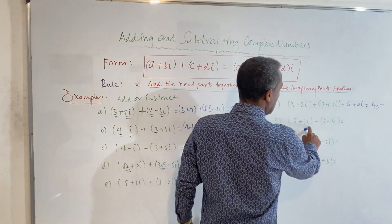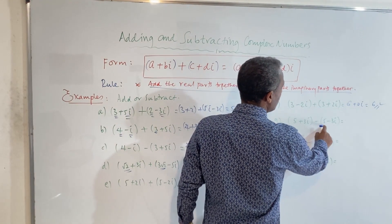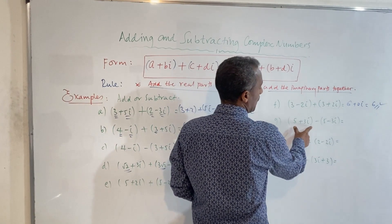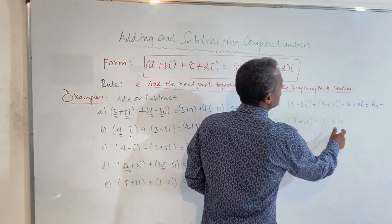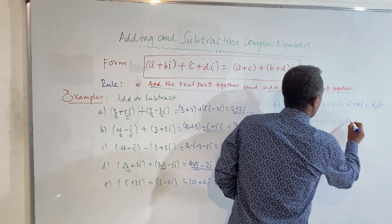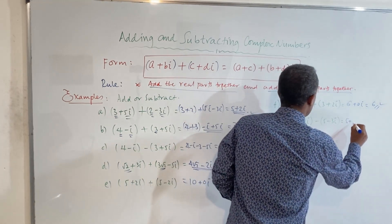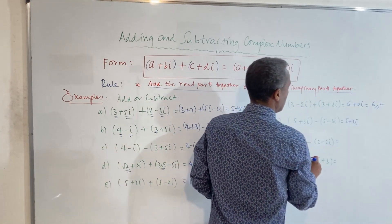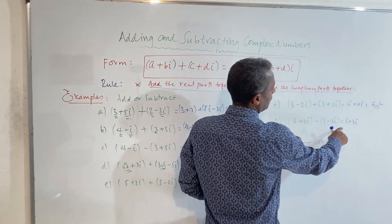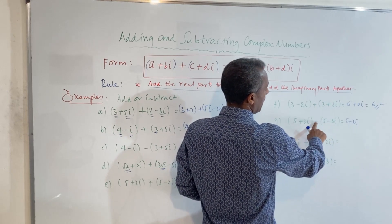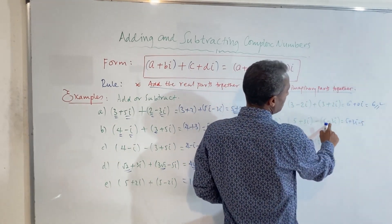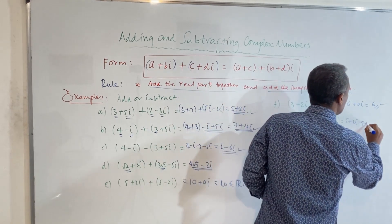Now, minus 3i plus 5 plus 3i, minus five. Collecting terms: minus 5 and 5 cancel, and minus 3i plus 3i also cancel, giving zero. Then minus 3i minus 5i gives minus 8i.